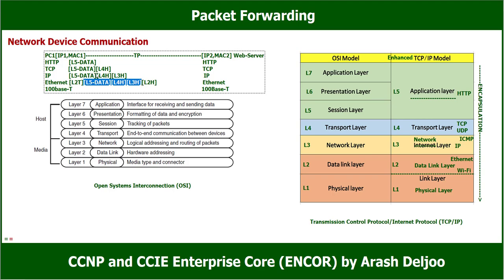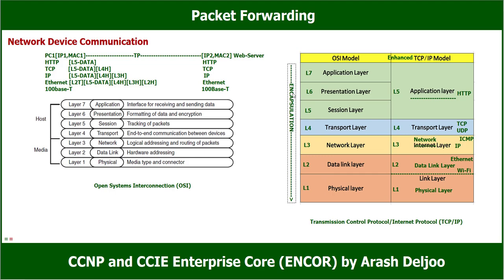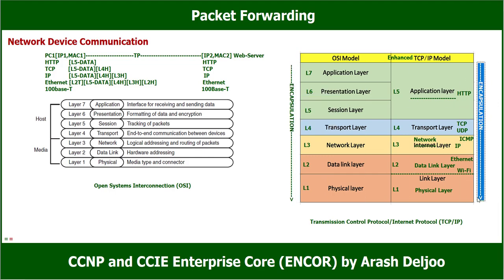At the destination, Ethernet uses its header and trailer and passes the packet up to IP. IP uses the Layer 3 header and passes the information to TCP. TCP uses the Layer 4 header and passes the Layer 5 data up to HTTP. This means at the receiver we use the reverse process, called de-encapsulation.